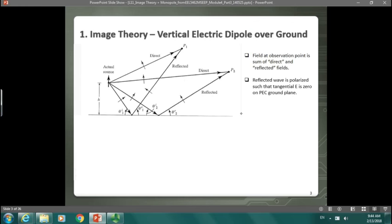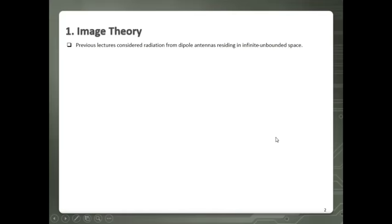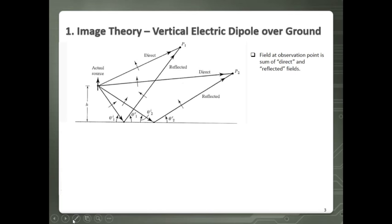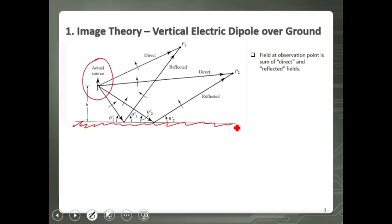As you can see in this figure, we have our actual source — an infinitesimal dipole, a vertically oriented dipole. This dipole is placed here, and this is our ground plane. The fields coming from the antenna are going to be reflected at this interface. Since this is a perfect electric conductor, it reflects all of the energy — there is zero field in the region below the ground plane.